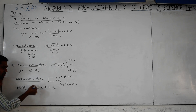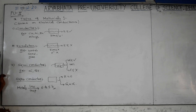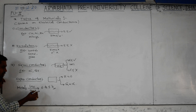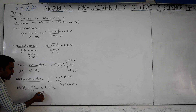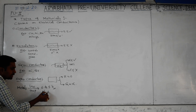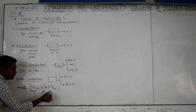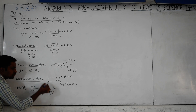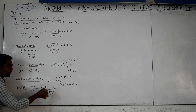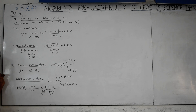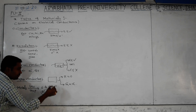Not all metals act as superconductors - only some special metals. Aluminum and mercury both act as superconductors in the range of zero to five Kelvin.